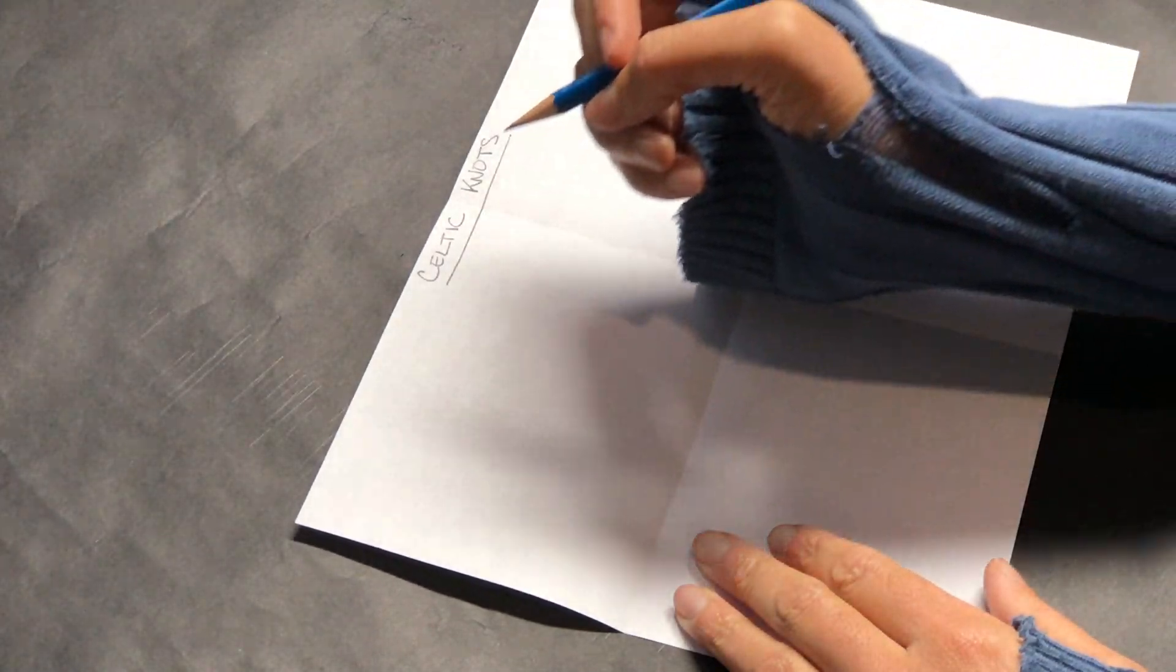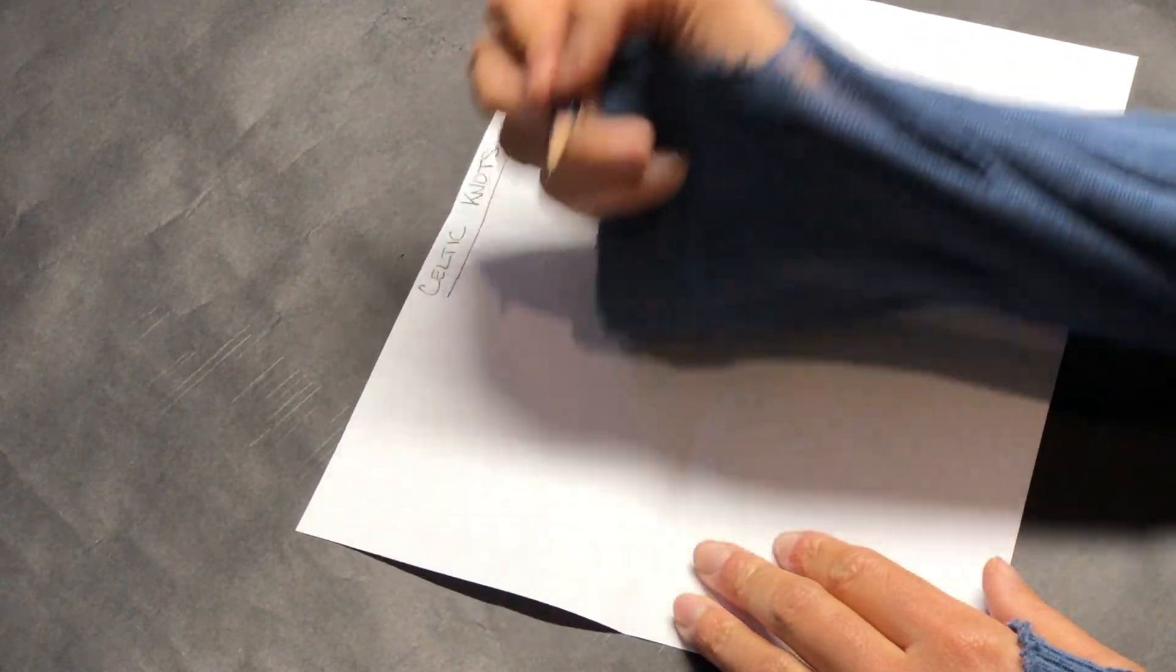Label your paper Celtic knots. Be sure to write your name, date, and class period on your paper.